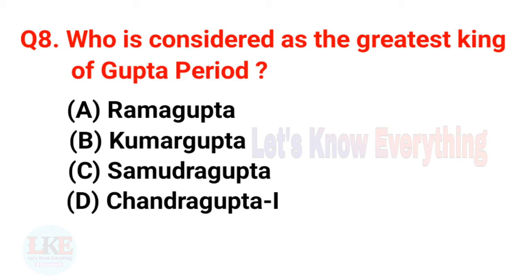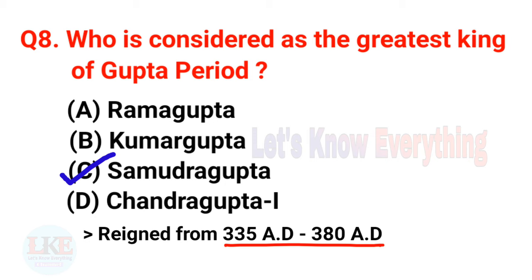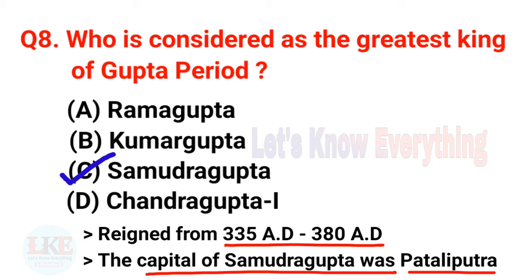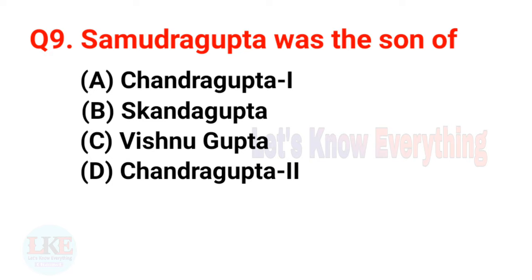Question 8: Who is considered the greatest king of the Gupta period? The right answer is option C — Samudragupta, who reigned from 335 AD to 380 AD. The capital of Samudragupta was Pataliputra. Question 9: Samudragupta was the son of Chandragupta I.